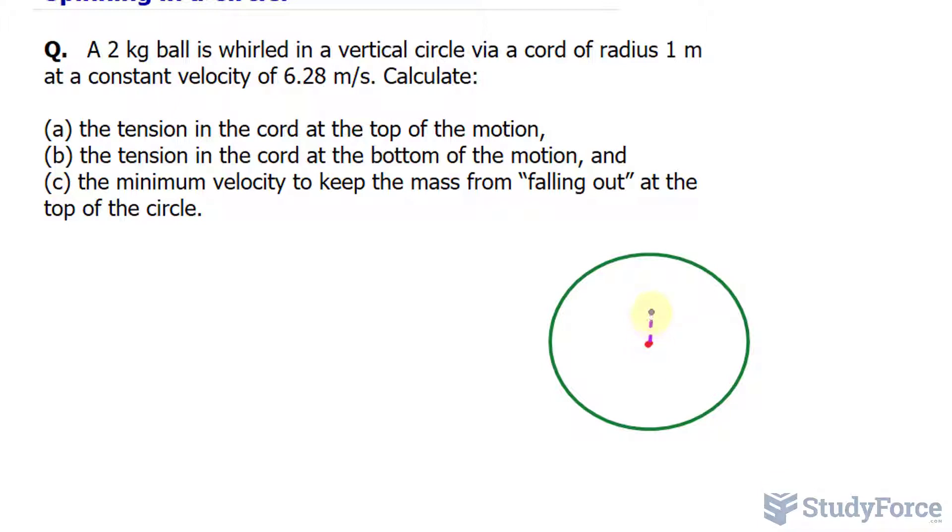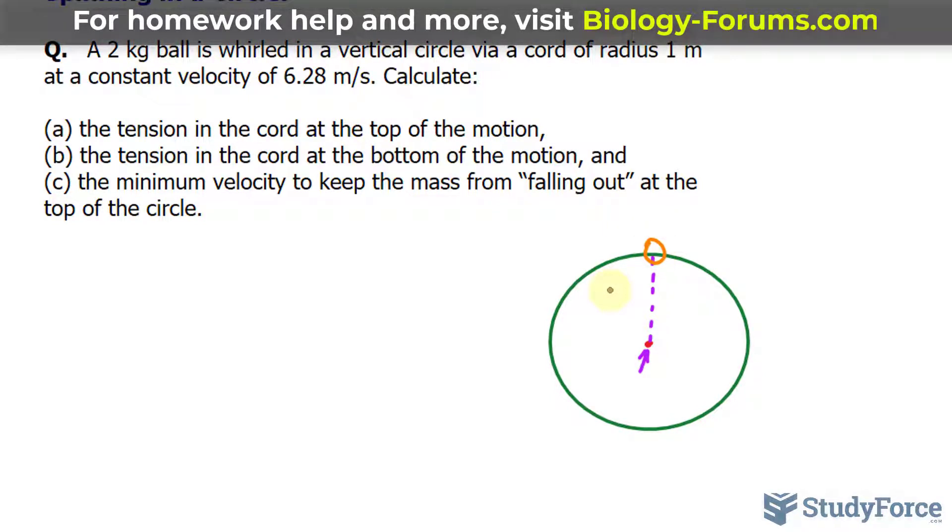If this is the string, let me show that with a dashed line. If that's the string and this is the person's hand right here, there are two forces acting on this object. Let's show that object to be this orange circle. The first force is the tension due to the cord.